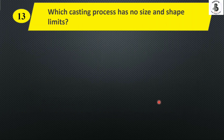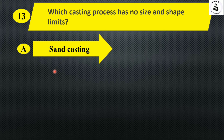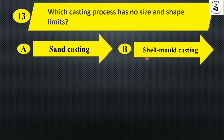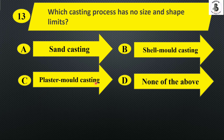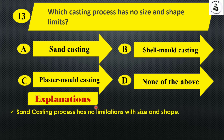Which casting process has no size and shape limits? Option A sand casting, option B shell mold casting, option C plaster mold casting, and option D none of the above. Basically, there are no limitations with respect to shape and size in sand casting. So the right answer is option A, sand casting.